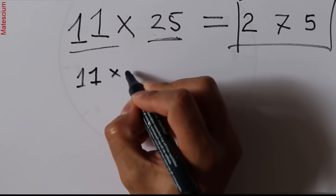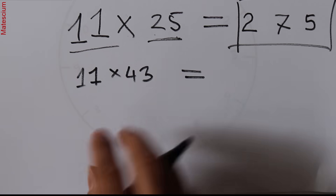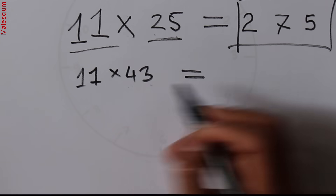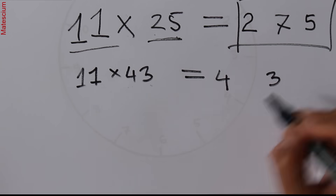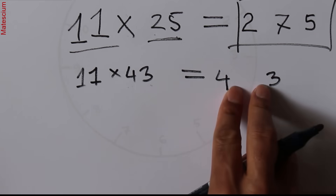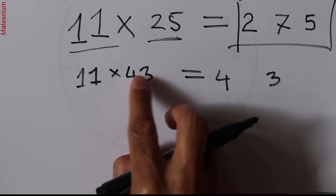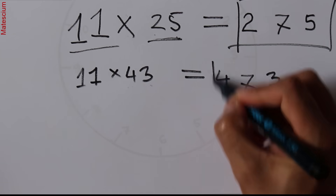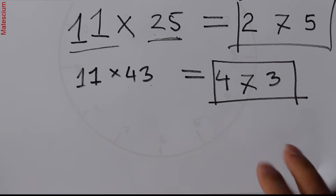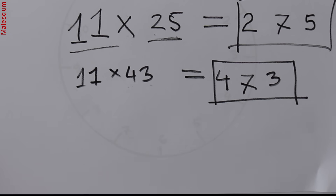Let's try another number: 11 times 43. Take the digits 4 and 3, place them apart with a gap. Add them: 4 plus 3 is 7. Place 7 in the middle — the answer is 473. That is the multiplication result of 11 and 43. Isn't it easy?